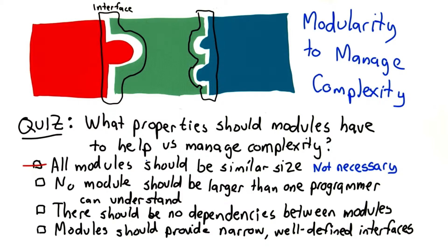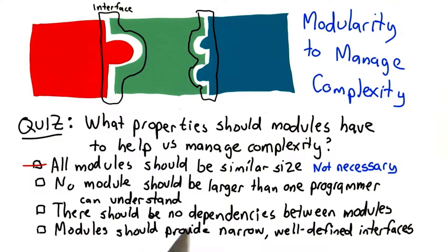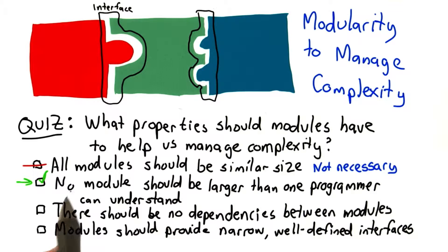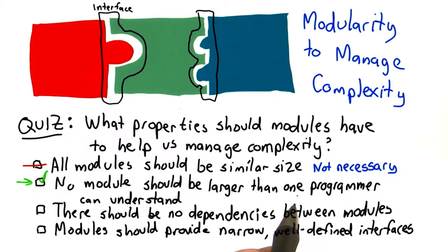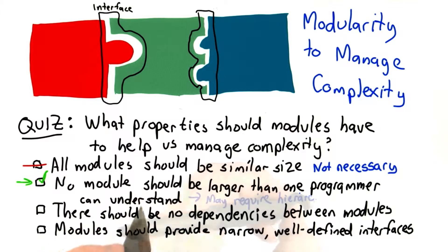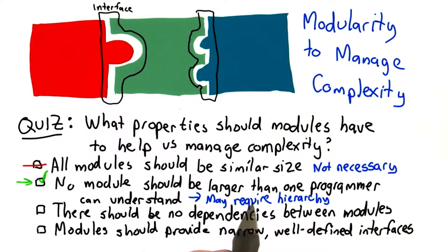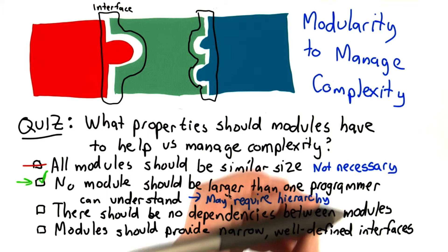It's okay if the sizes vary, and in a typical program we'll have some small modules and some larger ones. The second answer is true. Our goal in using modularity is managed complexity. So we want to break the program into pieces small enough that one programmer can understand and build them. Note that if we're dealing with a very large program, this may require hierarchy — we might need modules of modules.